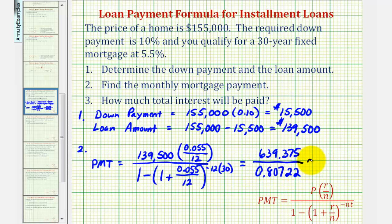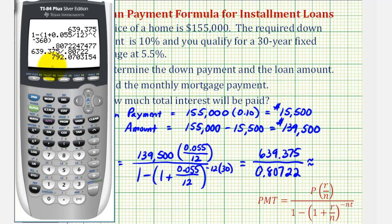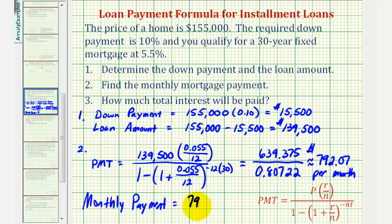Now we'll find this quotient. The monthly payment is approximately $792.07. Keep in mind, this does not include taxes and insurance.